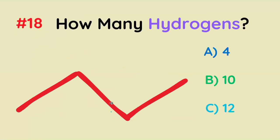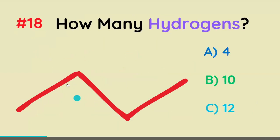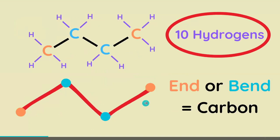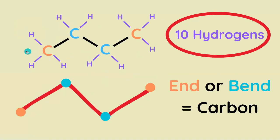How many hydrogens does this line bond diagram have? Each of the ends and bends are carbon, and each carbon needs four bonds. So we're going to fill in the rest with hydrogen, so it's going to have 10 hydrogens.